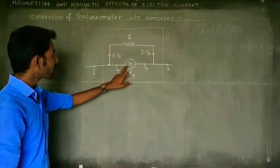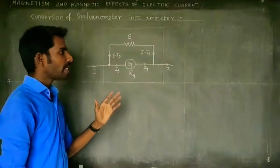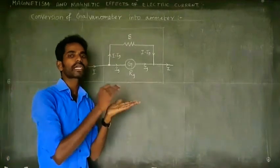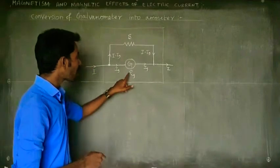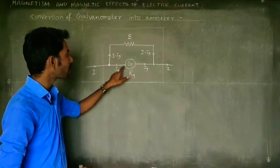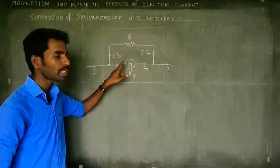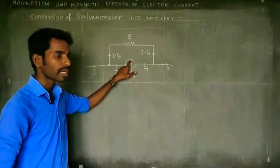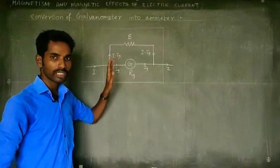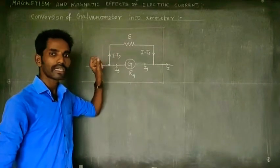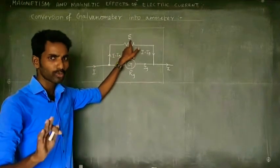The current flows through the device, and if we consider the resistance, we need to look at the voltage drop across the device. The voltage drop across the galvanometer is Vg, and the voltage drop across the shunt resistance is Vs. According to Ohm's law, V equals IR.